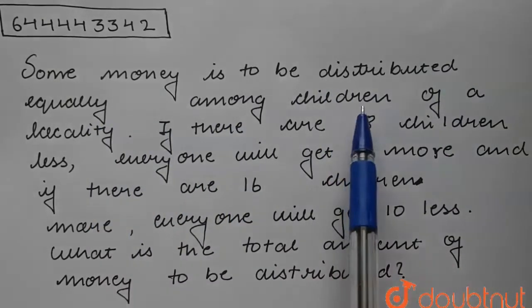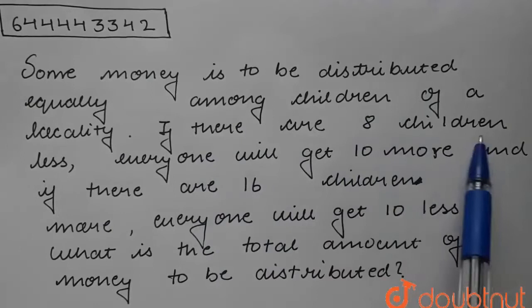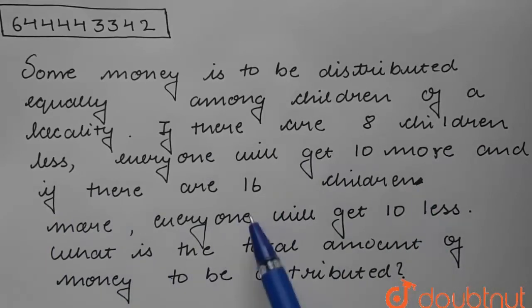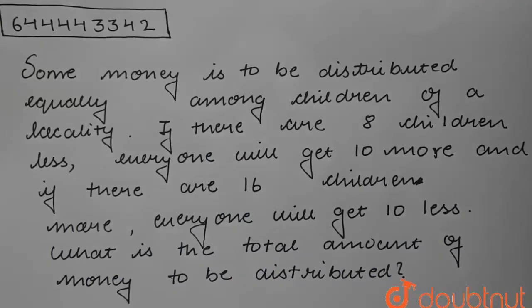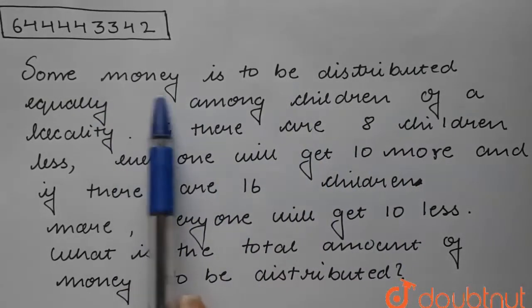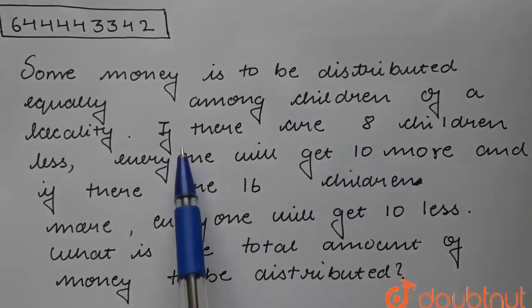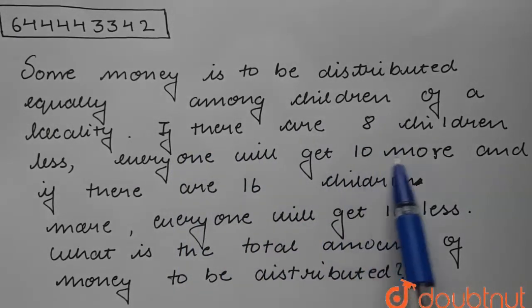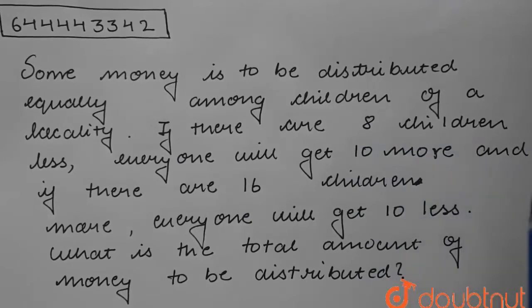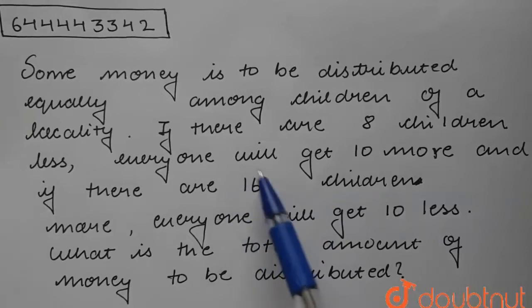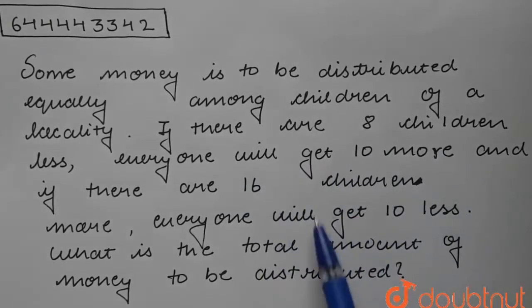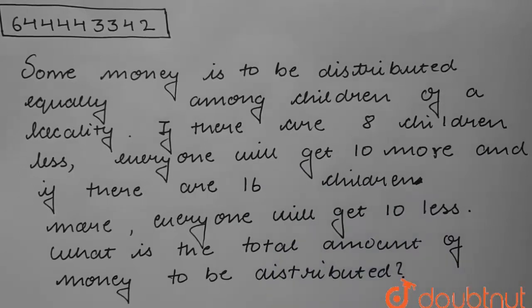Today's question: some money is to be distributed equally among children of a locality. If there were 8 children less, everyone will get ₹10 more. If there are 16 children more, everyone will get ₹10 less. We have to find the total amount of money to be distributed.